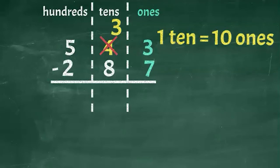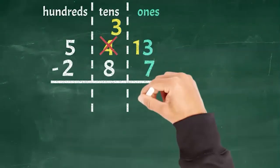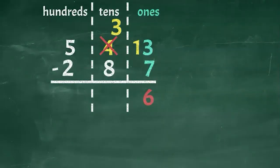Now instead of three ones we have 13 ones. You can either write a little one in front of the three or you can cross out the three completely and write 13 above it. Now since we have 13 ones in the minuend, we can subtract the seven ones in the subtrahend. 13 minus seven equals six.